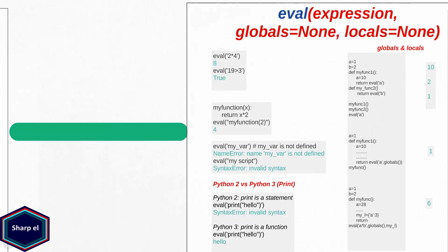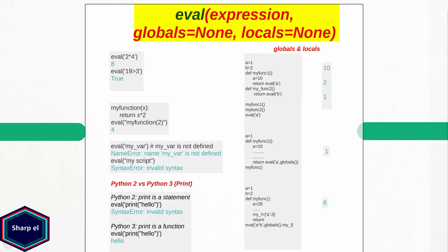Now let's move to the built-in function eval. The eval function takes three arguments where the first argument must be an expression string. An expression in Python is a section of code that evaluates to a value, like two plus three. In Python, a function is also an expression. The next two arguments, globals and locals, are dictionaries and they are optional. In our first example we have a string expression that multiplies two with four, so we get eight as output. In the next example we compare two integers and eval returns a boolean value true. I also define a function myfunction which takes a single argument, multiplies it by two and returns the value — eval returns four. In case you try to evaluate a statement that is not a Python expression or you pass an undefined variable, this will result in a name or syntax error.